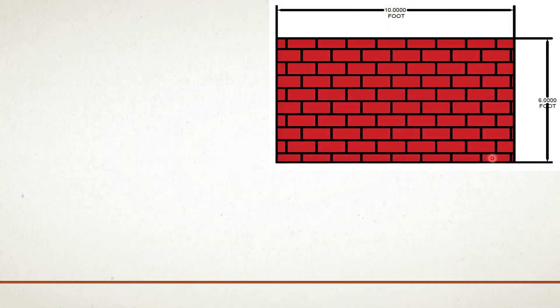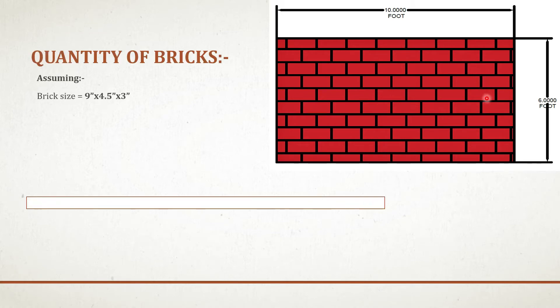Let's assume a wall of 10 foot long and 6 foot height, and the brick size as 9 inch by 4.5 inch by 3 inch. Let's say the thickness of mortar is 0.39 inch. As you can see in the picture, this brick is surrounded by the mortar on all sides.